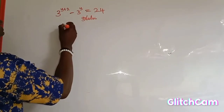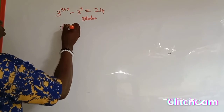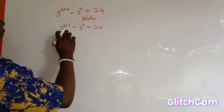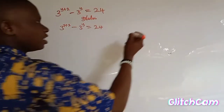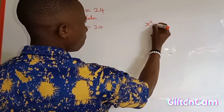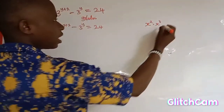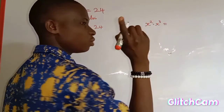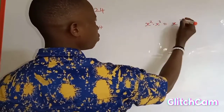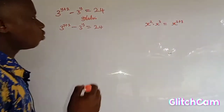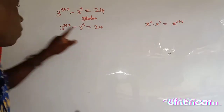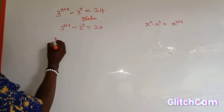So the question is 3 to the power of y plus 2, minus 3 to the power of y, is equal to 24. For this first term, remember the law of indices: where you have s to the power of 2 multiplied by s to the power of 3, since the bases are equal, you add the powers — 2 plus 3. We are going to apply that law to this first term.